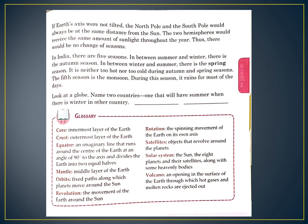Now look at a globe and name two countries — one that will have summer when there is winter in the other country. All of you will do this question by yourself without help. You will look at the picture of the earth or the globe and find two countries where one has summer while the other has winter at the same time.